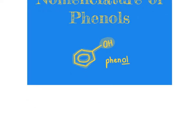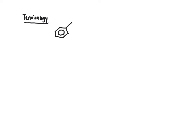A couple of terms to introduce here: the term for an aromatic ring that has a hydroxy group directly bonded to it is called a phenol. This term ends in OL to indicate it's an alcohol, and contains the term 'phen,' derived from the phenyl group (P-H-E-N-Y-L), which refers to an aromatic ring connected to whatever else as a functional group. So phenol is simply a phenyl group with an alcohol directly bonded to it.